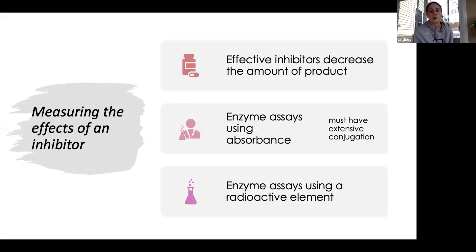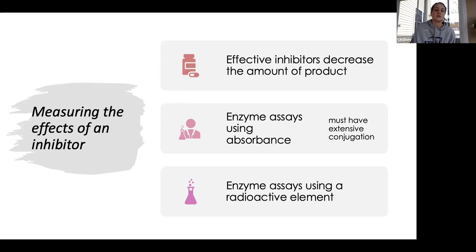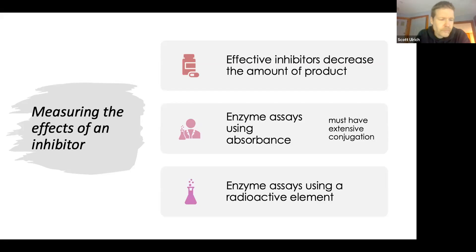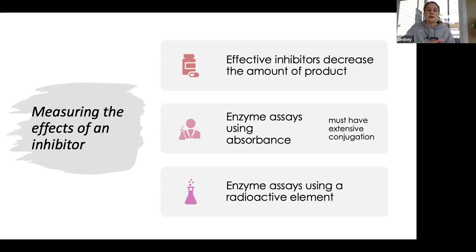It can work where either the starting material has extensive conjugation and the product doesn't, or some combination where one part of the reaction is measurable on the spectrum and another further down the line is not, causing the absorbance to decrease. Another way is using a radioactive element — essentially the same approach but measuring radioactivity instead of absorbance.